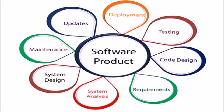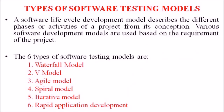So dear students, this is just an introduction to different types of software testing models. Software testing is an integral part of the software development lifecycle. Various models or approaches are used in the SDLC process where each model has its own advantages and disadvantages. A software lifecycle development model describes different phases or activities of a project from its conception. The commonly used models are: waterfall model, V-shaped model, agile model, spiral model, iterative model, and RAD or rapid application development model.